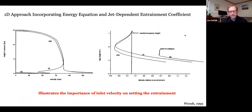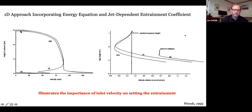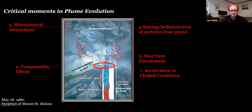Woods (1995) illustrates that the velocity assumed at the source — say 50, 75, or 200 m/s — sets much of the dynamics, primarily because of the entrainment coefficient. Higher velocity gives more entrainment, which can determine the difference between a collapsing column at 50 m/s versus one that rises into the atmosphere at 75 m/s.